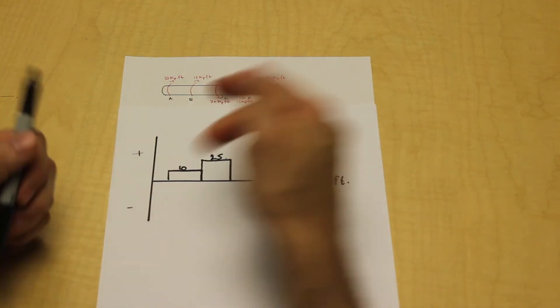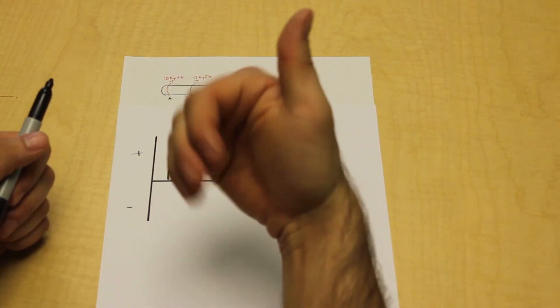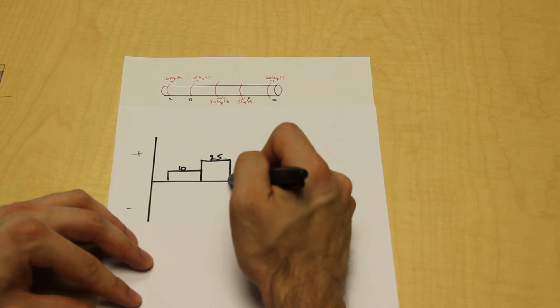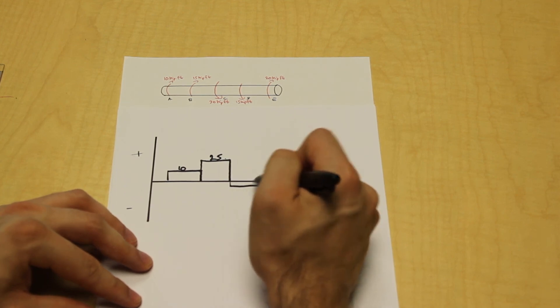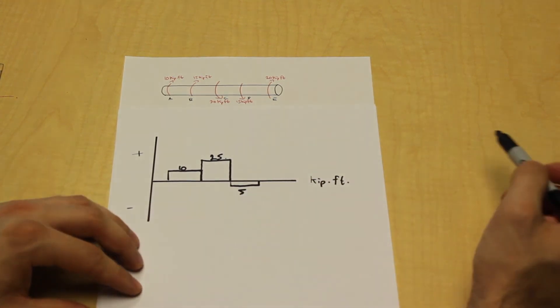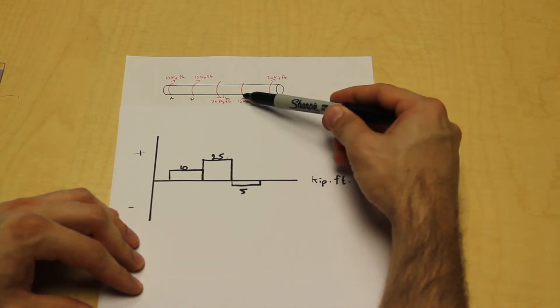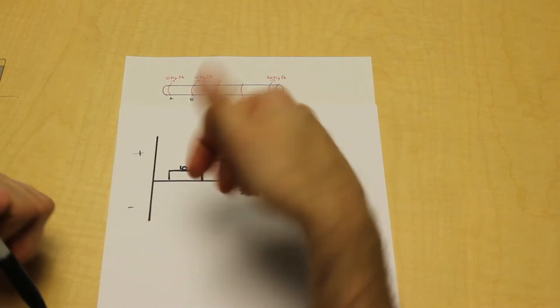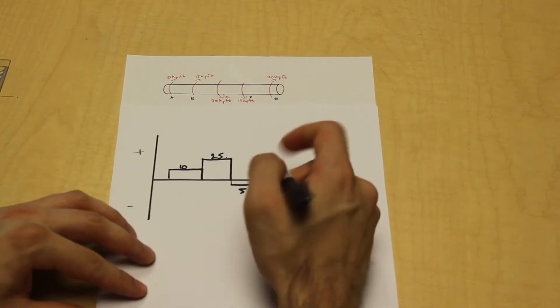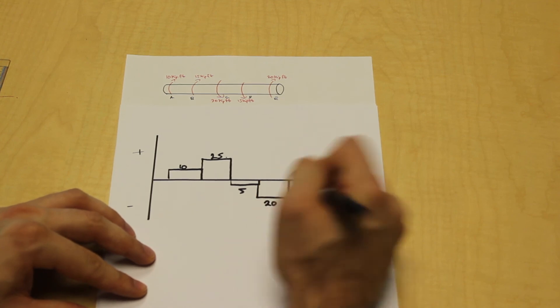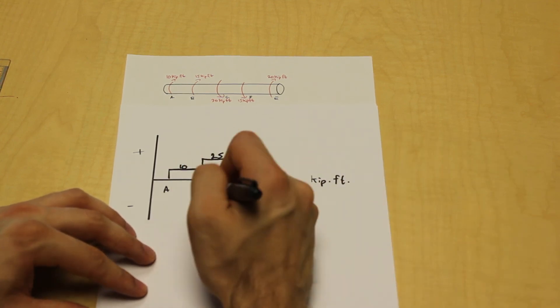Same thing, we're going to move to C now. We notice that C is in the negative direction, so what we're going to do is subtract 30 from 25. That's going to be our next torque. Easy. We have 5. Moving on to D, same direction as 30, negative direction, so it's negative 15 minus 5, minus 15, negative 20.